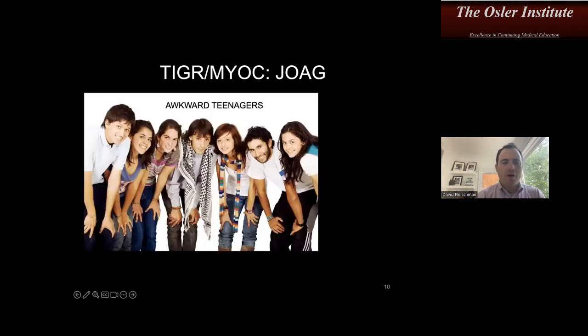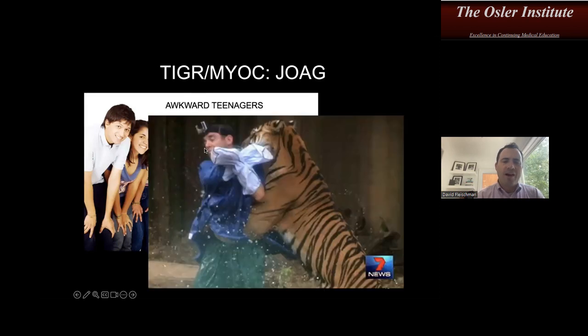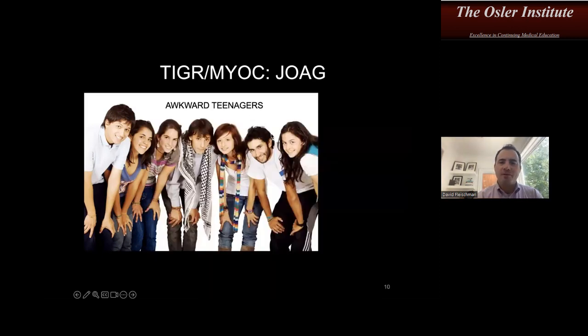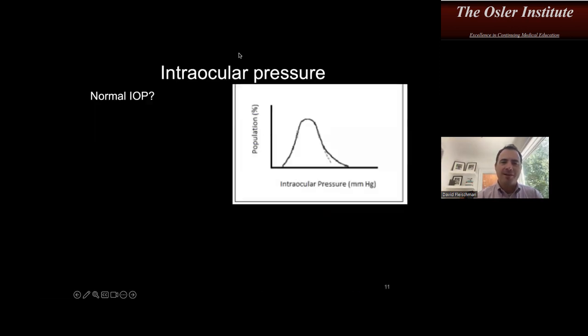For MYOC and myocilin in juvenile open-angle glaucoma: juvenile open-angle glaucoma affects teenagers — this is not the old-person glaucoma. Picture a group of awkward teenagers, and one of them gets mauled by a tiger. Tiger — myocilin. As weird as it sounds, you will not forget that tiger myocilin affects teenagers with juvenile open-angle glaucoma.